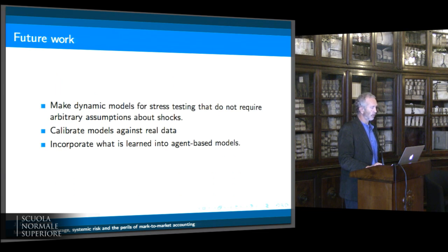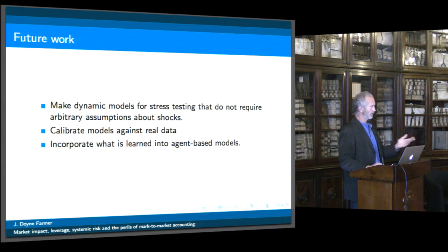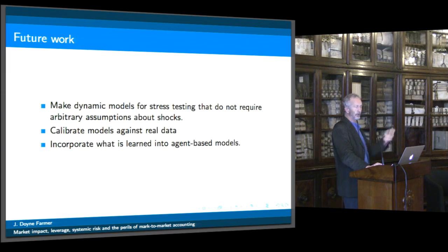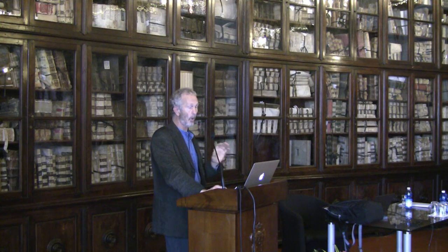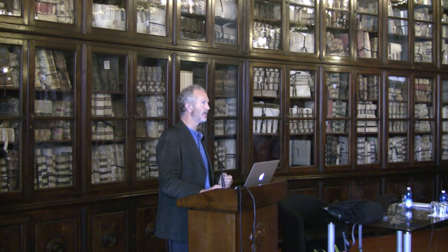Future work: we're in the process of making dynamic models inspired in part by Fabrizio and Fulvio's work. We're going to try and calibrate these models against real data. We think it could be very useful to actually compute this matrix for real banks. And we're also trying to incorporate some of this into agent-based models where we can take into account some decision-making by the banks leading up to or in advance of these events, since banks are always managing their portfolios to try and avoid this kind of thing.